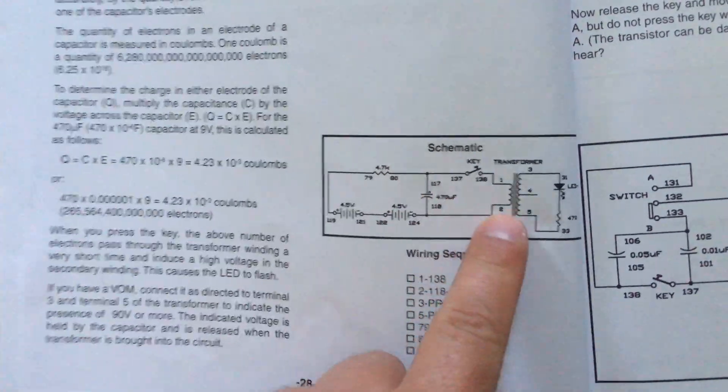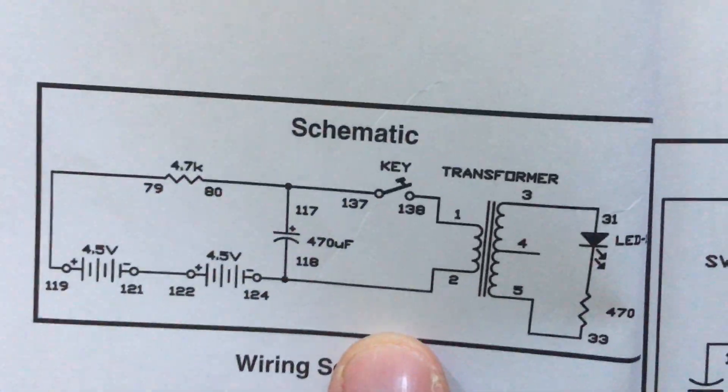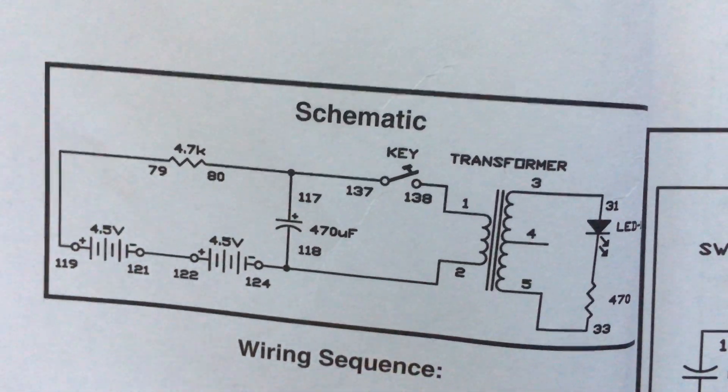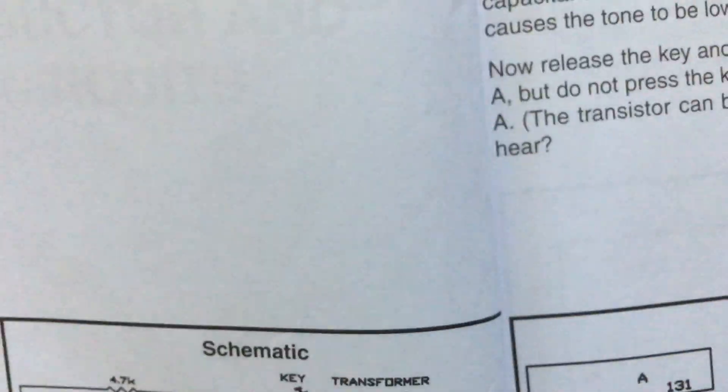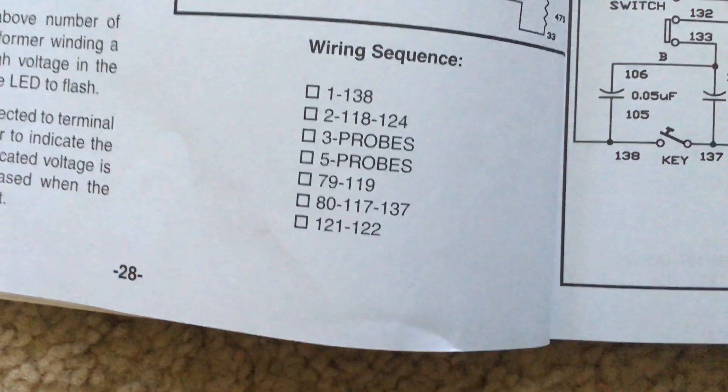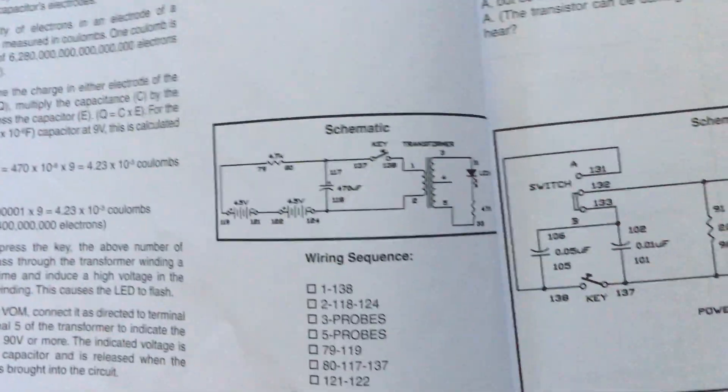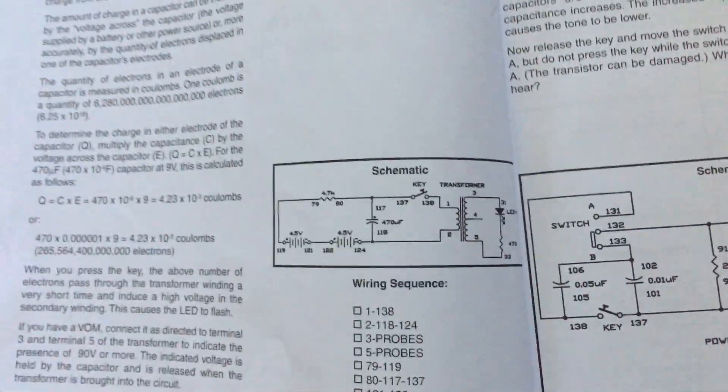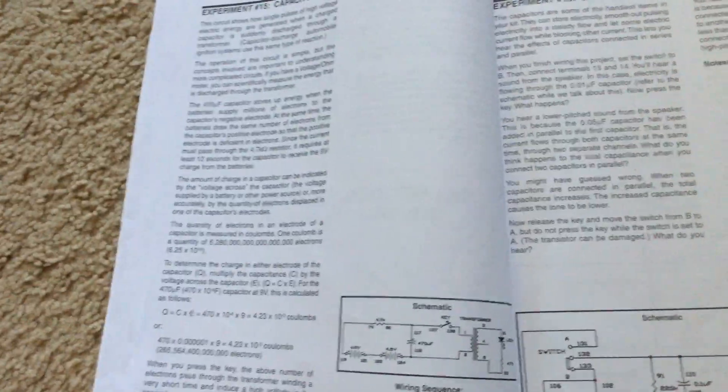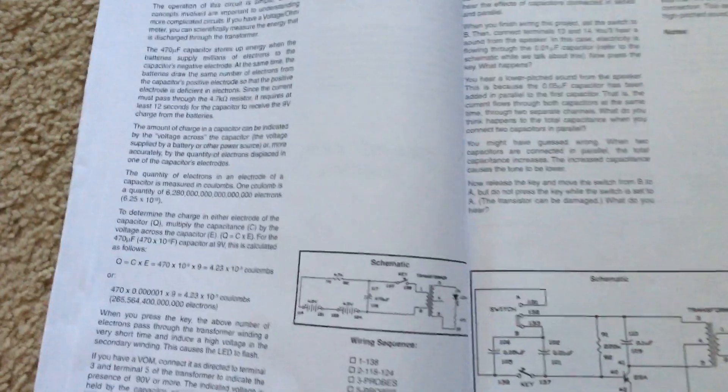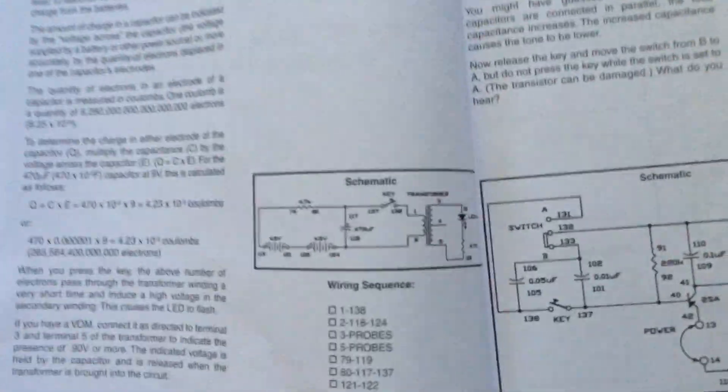Here's the wiring sequence, but I can't really understand it. It says once again to connect wires 3 and 5 to the probes, but I don't know what they are. If you have an idea of what they are, and especially if you own this kit, feel free to tell me in the comments because any advice will be helpful.